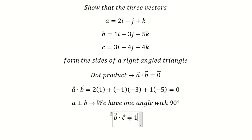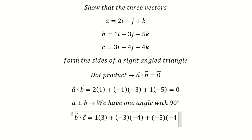So 1 multiplied by 3 plus negative 3 multiplied by negative 4 and negative 5 multiplied by negative 4. So this one we have 35. And the next one, a dot c, equals 6.